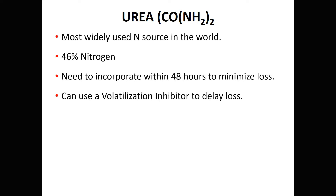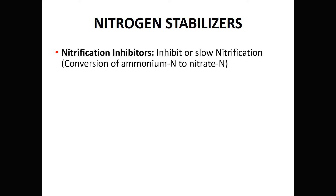If we put urea on the surface, we can delay that response about two weeks waiting for rain to incorporate it. If we use a volatilization inhibitor — sometimes called a urease inhibitor — it allows us to put urea or urea-containing fertilizers on the soil surface and wait a couple of weeks, hoping for a half inch of rain or more to serve as incorporation, or we can mechanically incorporate it with a tillage pass.